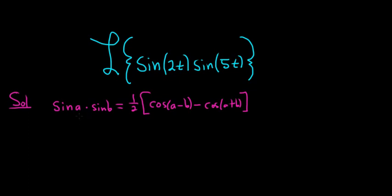So in this case, we can replace a with 2t and b with 5t. So we have sine of 2t, sine of 5t, and this is equal to 1/2. Then we have cosine, and then a minus b, so it'll be 2t minus 5t, right? So 2t minus 5t is negative 3t, and then minus cosine of 2t plus 5t. So 2t plus 5t is 7t.